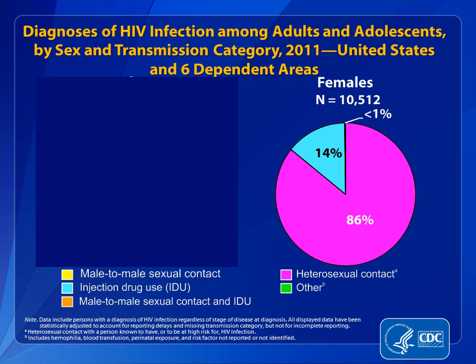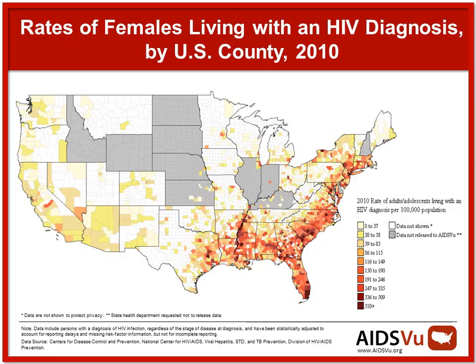When we look at how women get infected with HIV in the United States, you can see that the vast majority are infected through heterosexual sexual activity. About 14% are infected through injection drug use. In addition, if you look at this map, you will see that there are geographic aspects of the epidemic in women in the United States. The epidemic appears to be concentrated along the east coast, but most especially in the southeast quadrant of the United States.